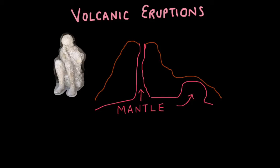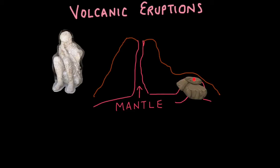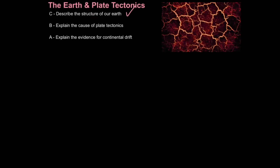Volcanic eruptions are slightly easier to predict. Magma moves slowly and can slowly rise towards the Earth's surface, causing it to bulge. These bulges can indicate that a volcanic eruption is on its way. However, sometimes the magma just cools and forms rock, so it's a false alarm. So again, volcanic eruptions are not easy to predict. Now you can explain that convection currents are the cause of plate movement — plate tectonics.